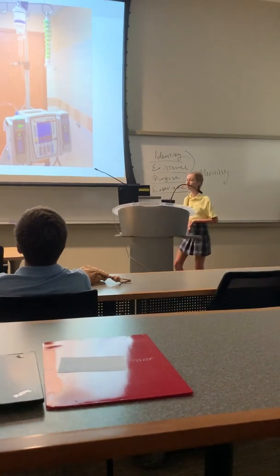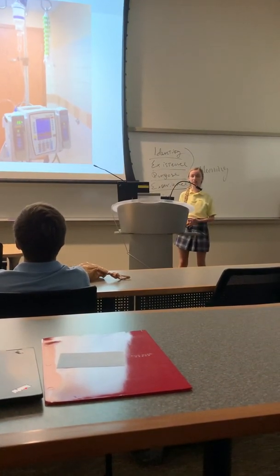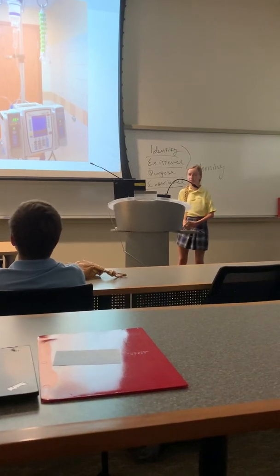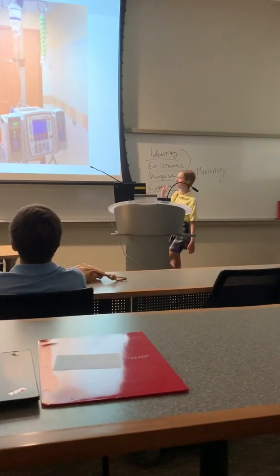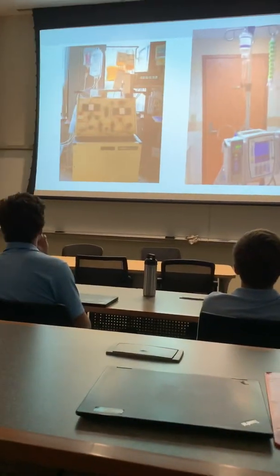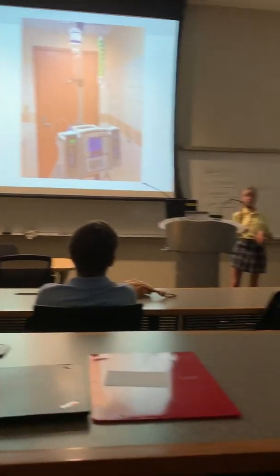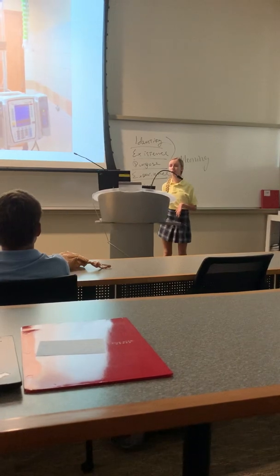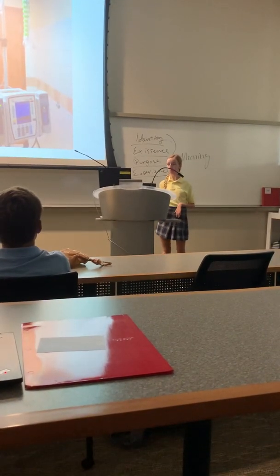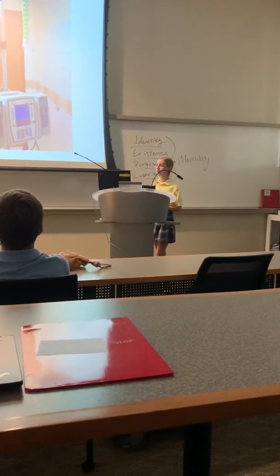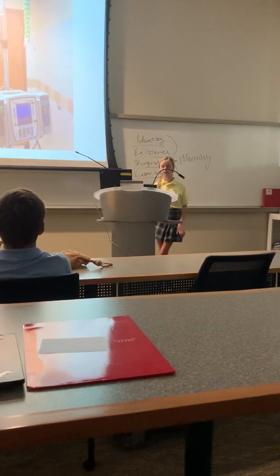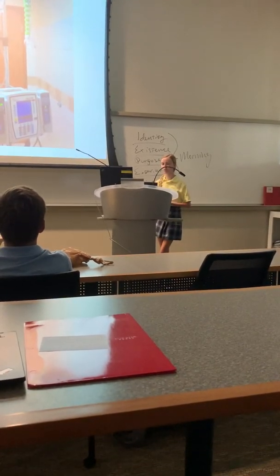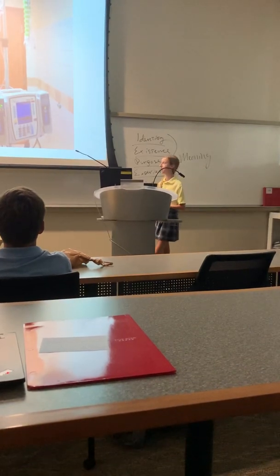There are very few treatment options for AFM currently because it's such a new disorder, but I was lucky enough to receive plasmapheresis, which is shown by the machine on the left. It's where they take the plasma out of your body and replace it with immune plasma in order to give you antibodies that are healthy. This is what really helped me regain motion in my legs back, because as you may have been thinking, it's odd that I lost motion in my arms first and then my legs — it just seems kind of backwards.